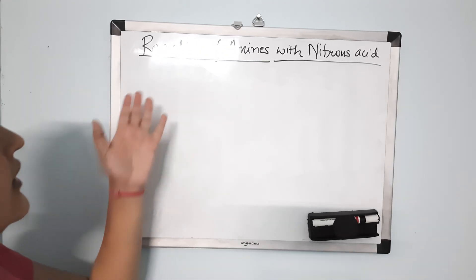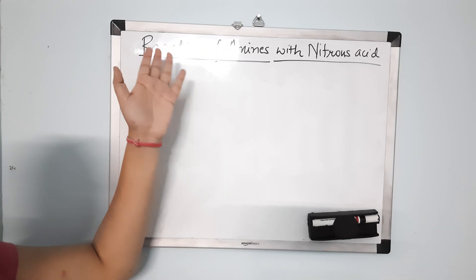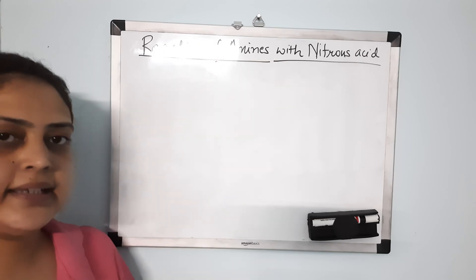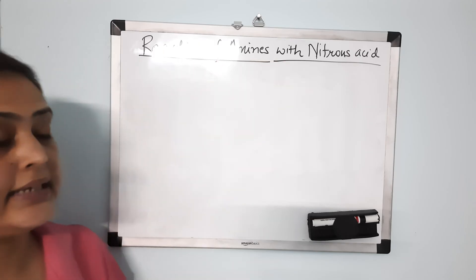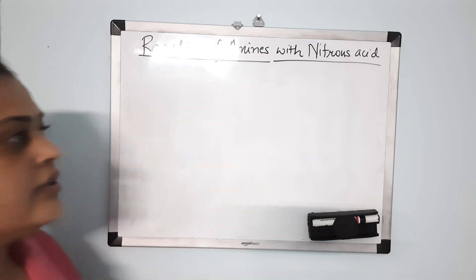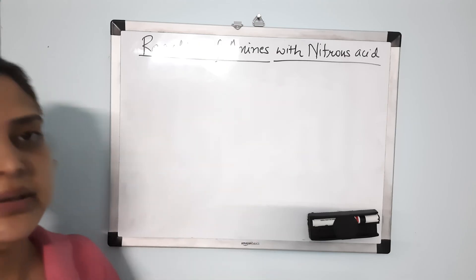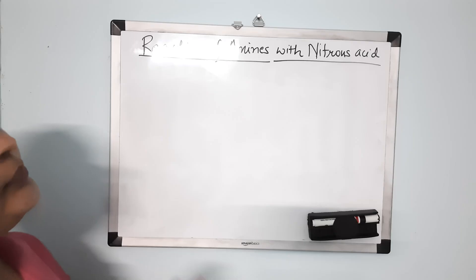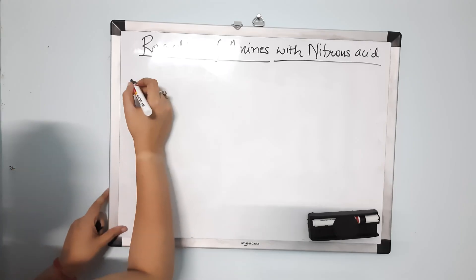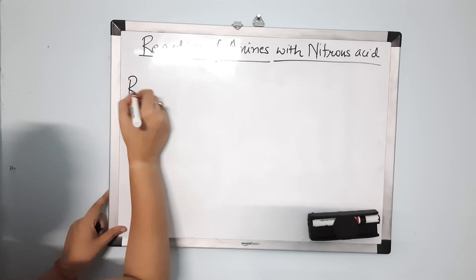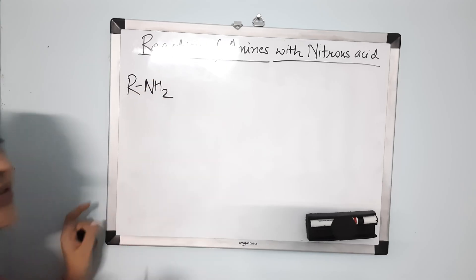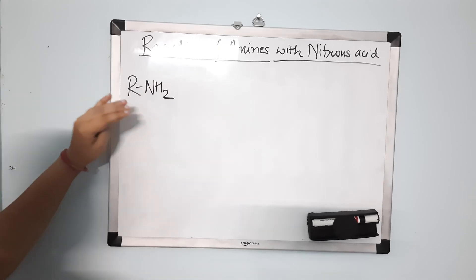Today we'll start with the topic: reaction of amines with nitrous acid. Primary amines, secondary amines, and tertiary amines react differently with nitrous acid. First, we will see how primary aliphatic amines react with nitrous acid. Let us take primary amine RNH₂ — this is our aliphatic primary amine.